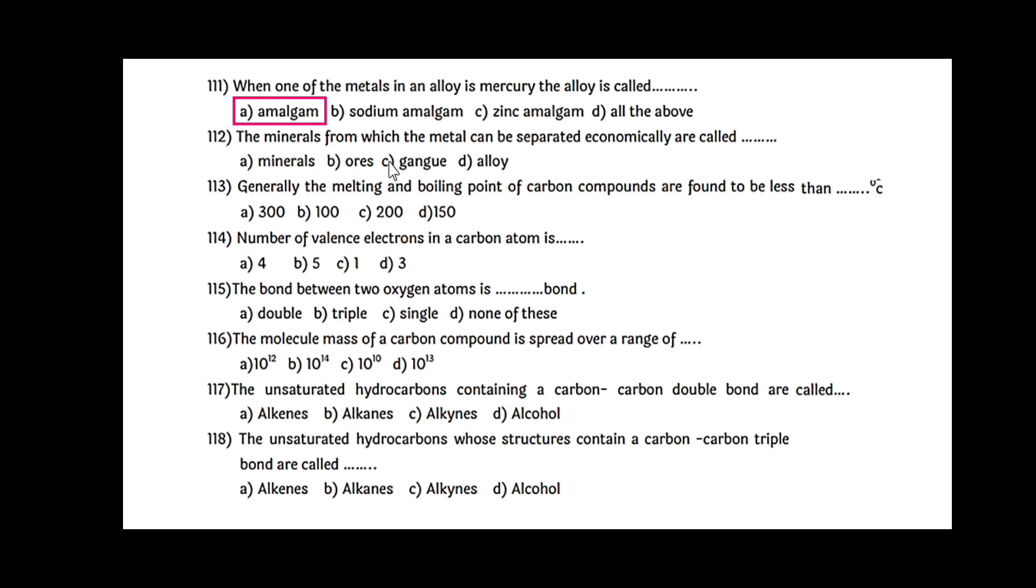When one of the metal in an alloy is mercury, that alloy is called amalgam. The minerals from which the metal can be separated economically are called ores. Generally, the melting and boiling point of carbon compounds are found to be less than 300 degrees Celsius.